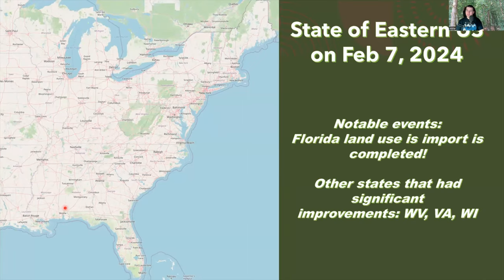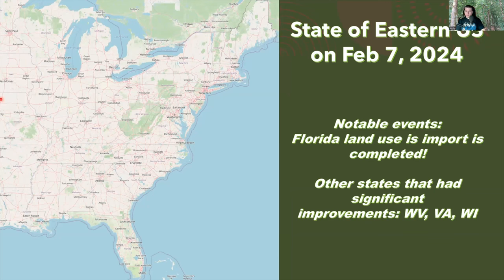As made by multiple mappers, you can see that the Florida land use import has been completed. Also Georgia and other states like Alabama, Missouri, Wisconsin, or West Virginia have been mapped thoroughly. That is pretty great progress, but you can see that there are still a lot of white areas to improve.